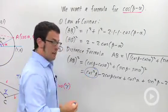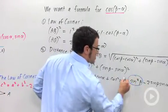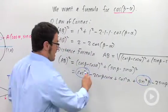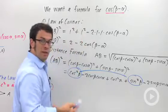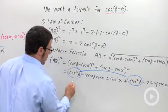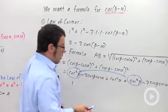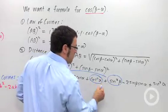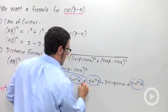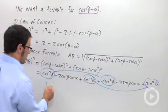We've got cosine squared beta plus sine squared beta. Very nice. That adds up to one by the Pythagorean identity. So I'll put a one down here. And we also have cosine squared alpha and sine squared alpha. That also adds up to a one. So it's another one.